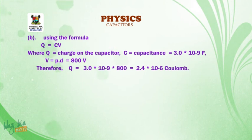And then the same thing, using the formula when they ask you that determine the charge. The charge is simply Q is equal to CV. You will also use the formula and you will arrive at the equation where you have Q is equal to charge, C is equal to capacitance, and substitute inside the formula. You will now arrive at 2.4 times 10 to negative 6 coulombs.